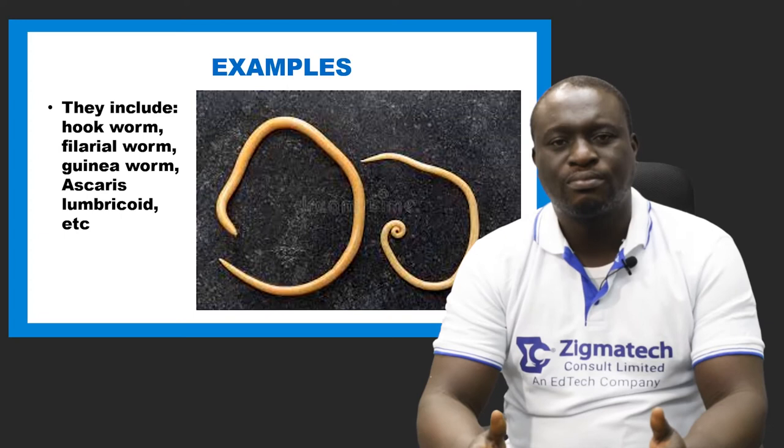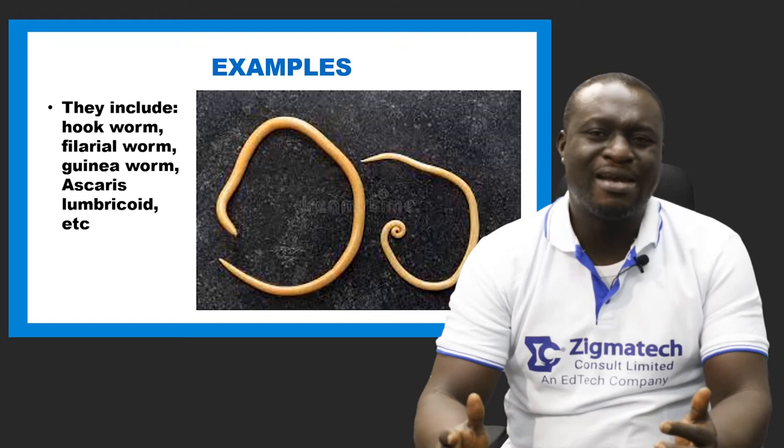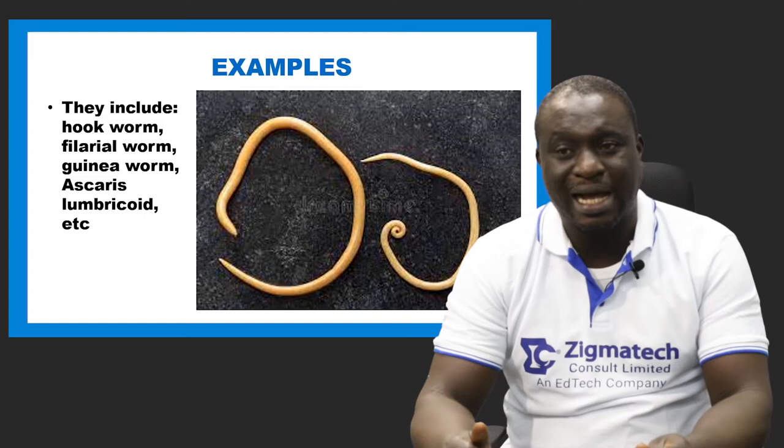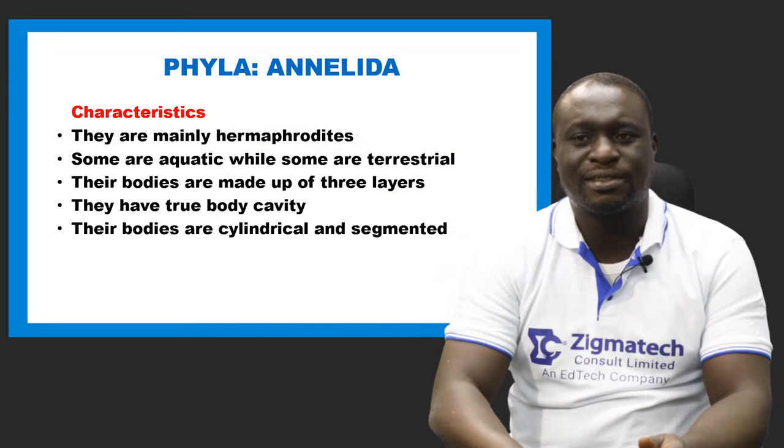Examples of Nematoda include hookworm, filaria worm, guinea worm, and Ascaris lumbricoides. As you can see in the diagram, Ascaris lumbricoides is a parasite.